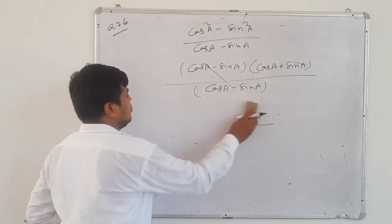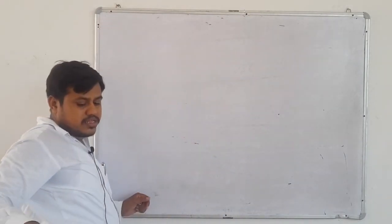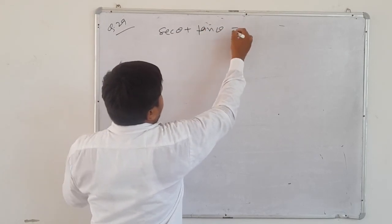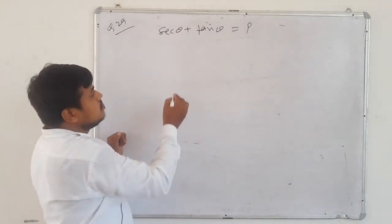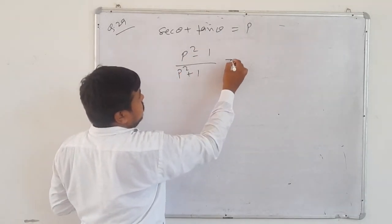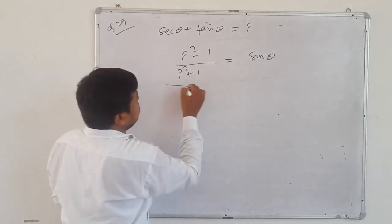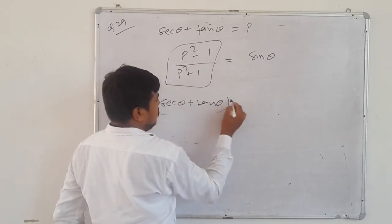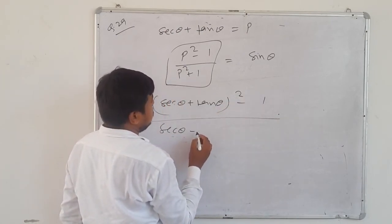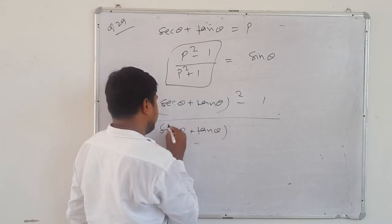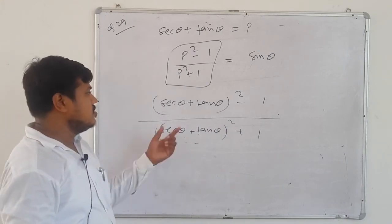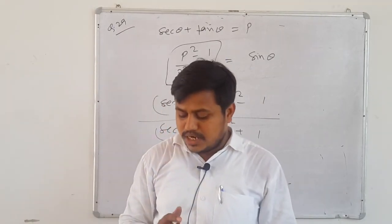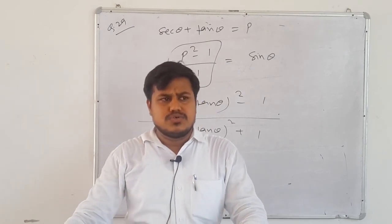Question 29: the easiest question. Given: sec θ + tan θ = P. Prove: (P² - 1)/(P² + 1) = sin θ. Choose LHS, substitute P = sec θ + tan θ. Numerator: (sec θ + tan θ)² - 1 = sec²θ + tan²θ + 2·sec θ·tan θ - 1 → becomes tan²θ expression. Denominator: (sec θ + tan θ)² + 1 → becomes sec²θ expression. Then take common, simplify — question 30 similarly: put given value in LHS and simplify.